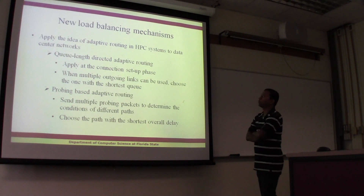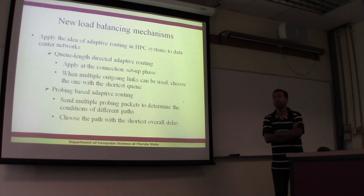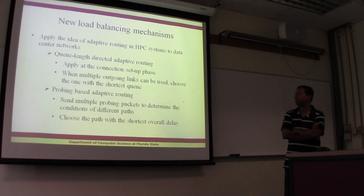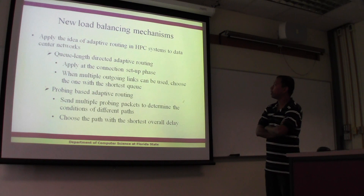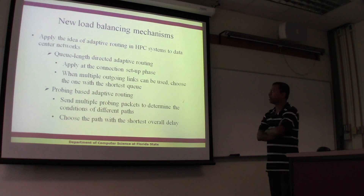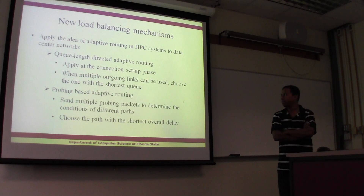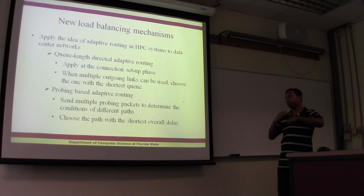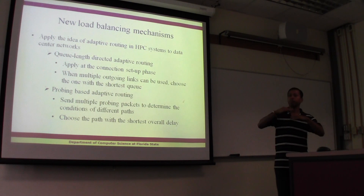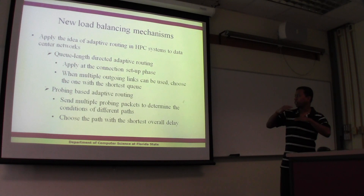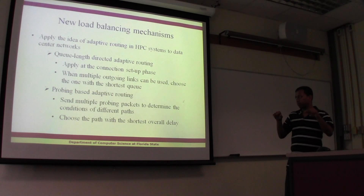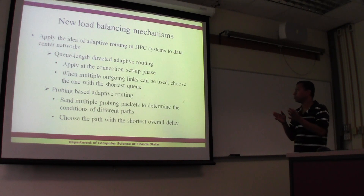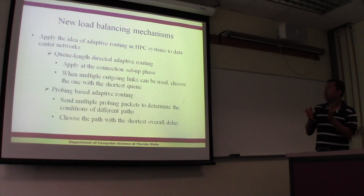Based on that, we look at whether we can propose some kind of better load balancing mechanism. The first is Q-link directly adaptive routing — at every phase while ascending up the tree, we check which of the switches has the least number of packets in its queue.